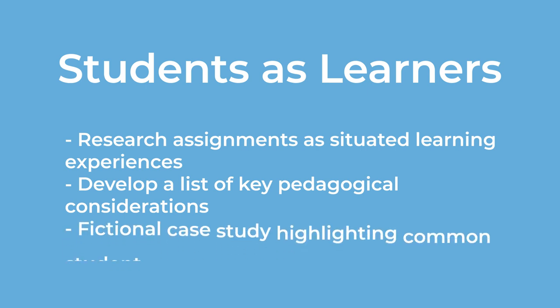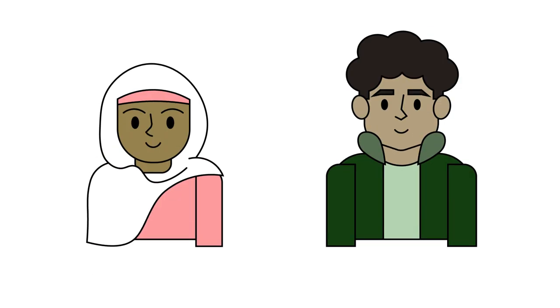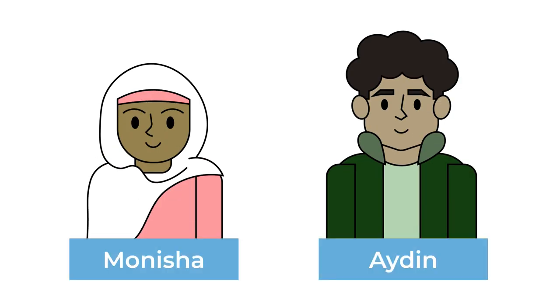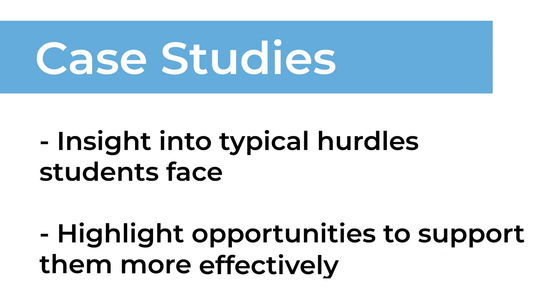Each section includes a fictional case study highlighting common student experiences throughout the research process. Throughout this module, we'll follow two fictional students, Manisha and Aiden, as they navigate the common challenges of a research process. These case studies will give us insight into the typical hurdles students face and highlight opportunities for us, as educators, to support them more effectively.